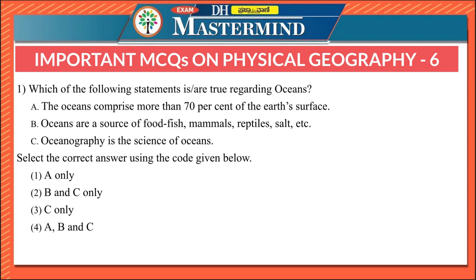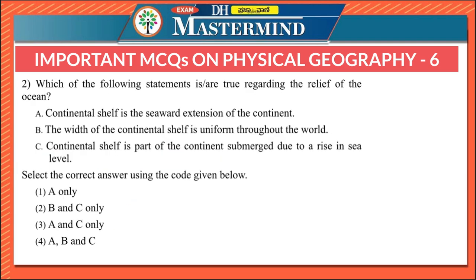The first question asks which of the following statements is correct regarding oceans. The oceans comprise more than 70% of the earth's surface. Oceans are a source of food — fish, mammals, reptiles, salt, etc. Oceanography is the science of oceans. All three statements are correct, so the right option is A, B and C.